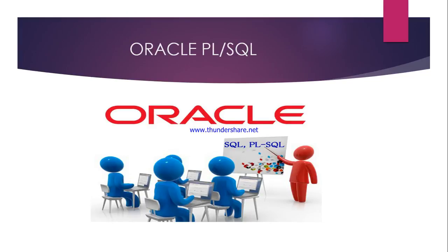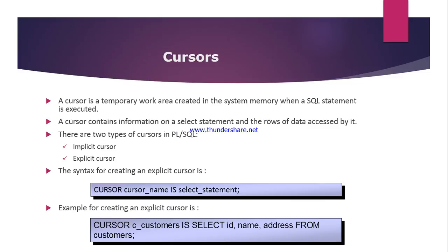Hi guys, welcome back to our class. Today we are going to see cursors in Oracle database. A cursor is a temporary work area created in system memory when a SQL statement is executed. Whenever a SQL statement is executing in Oracle database, the cursor area will be created automatically. Once the SQL statement is executed, the temporary area or context area will be created by Oracle database for storing the information about that particular SQL query.